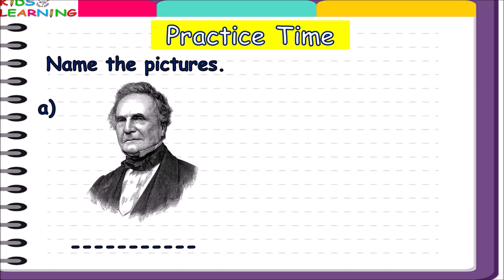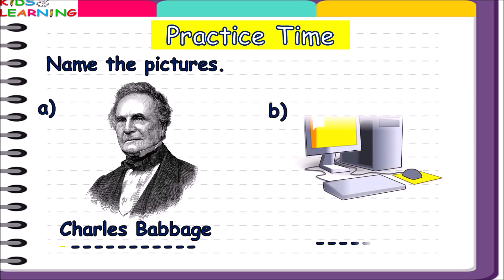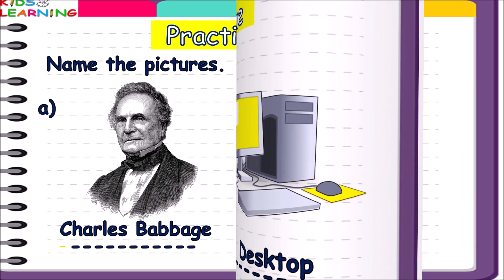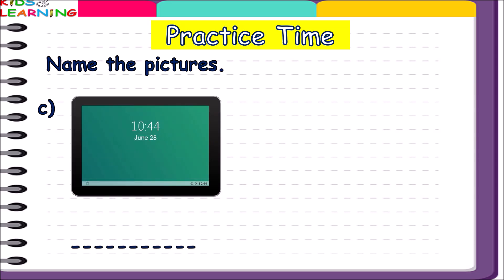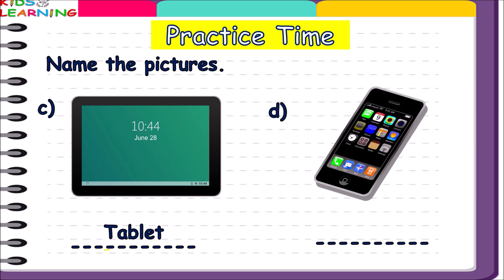Name the pictures. First is Charles Babbage. B — this is a desktop. C — this is a tablet. D — this is a smartphone.